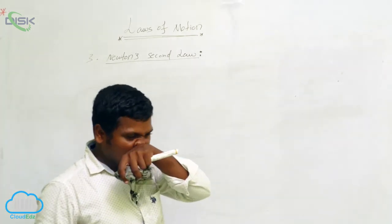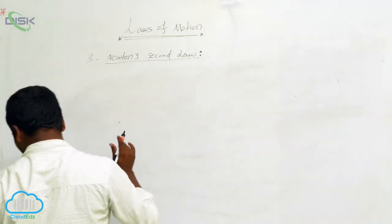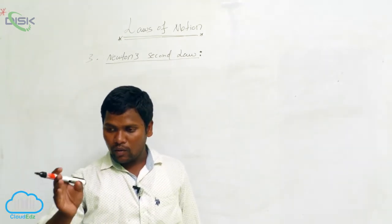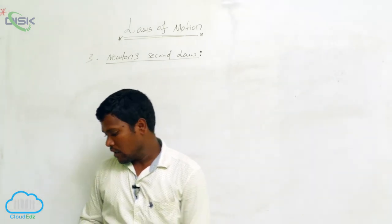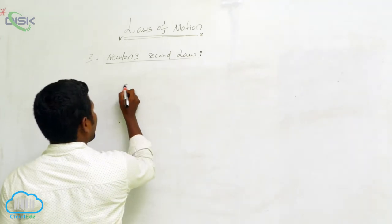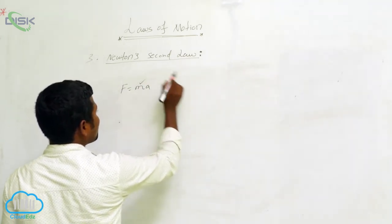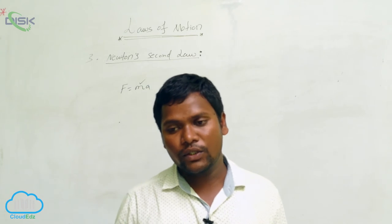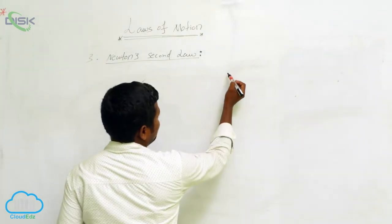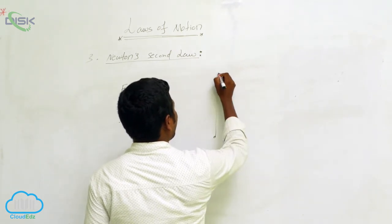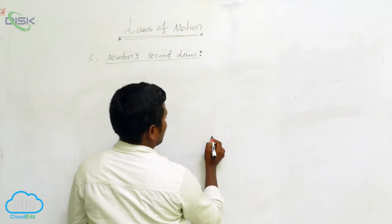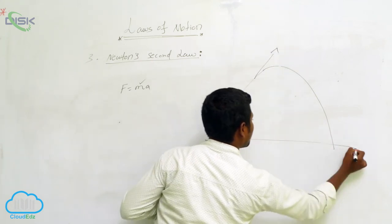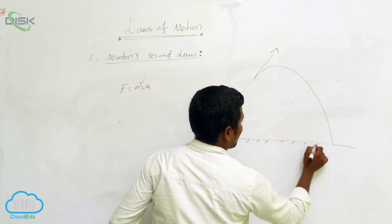Newton's Second Law can also be applied to particles. We can determine how much force acts as a particle moves from one place to another using F = ma, where m is mass and a is acceleration. For example, if I throw a ball, it travels in an arc and eventually returns to the ground.